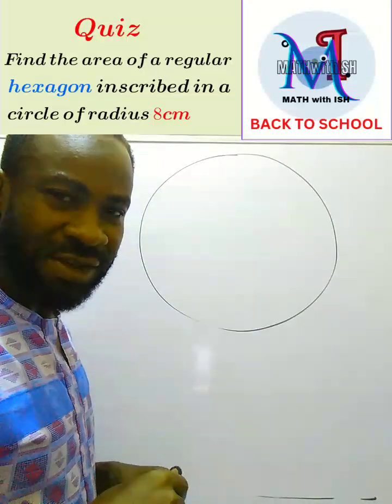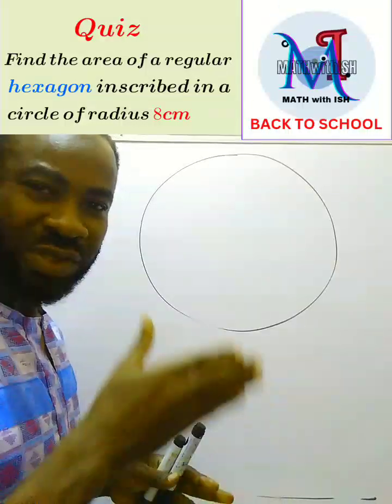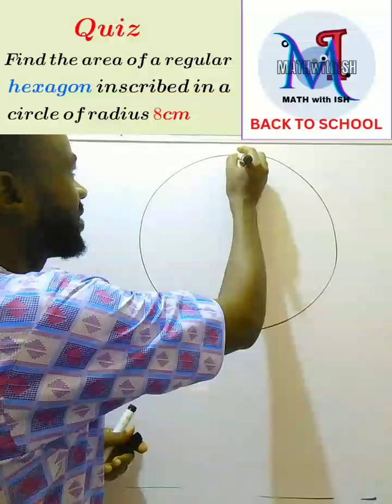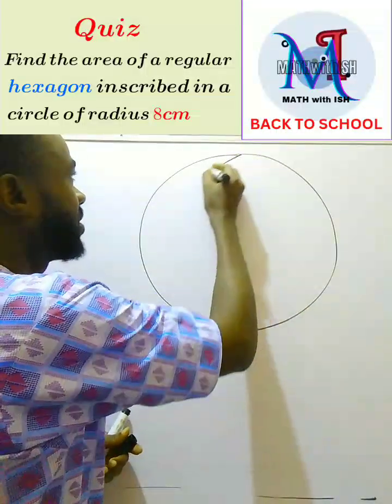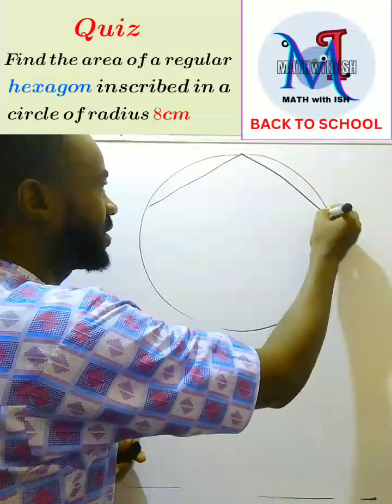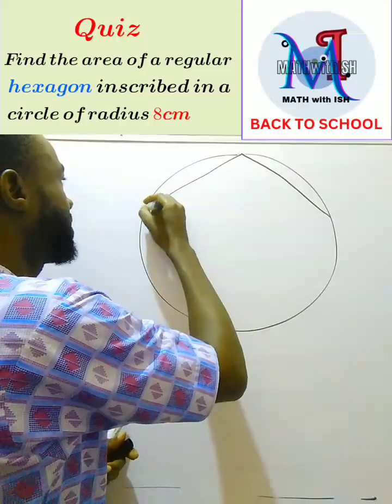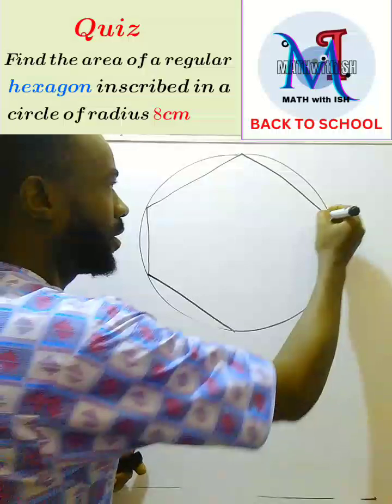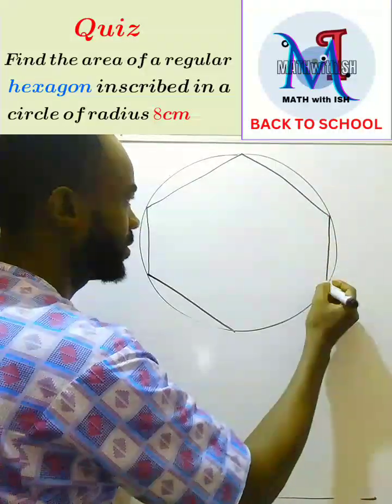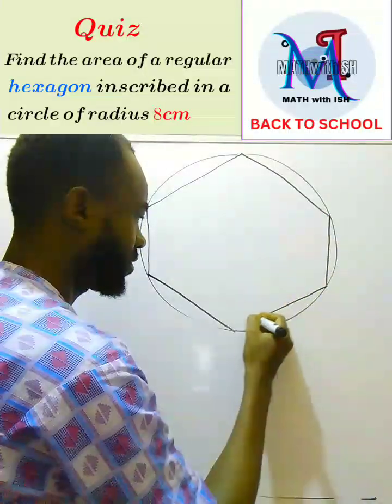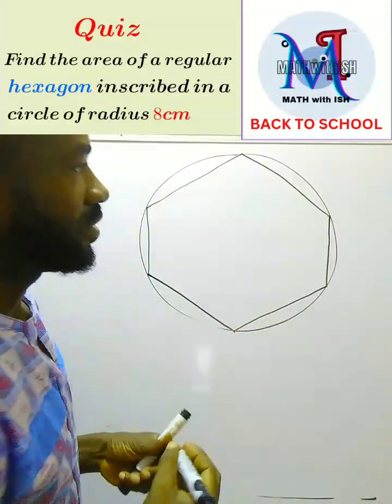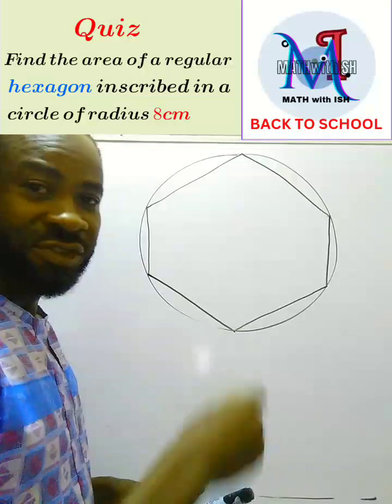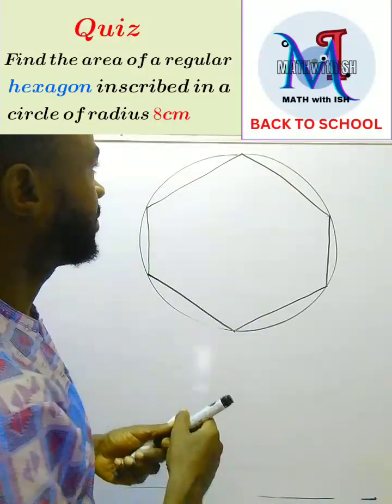Then your next question should be what is a hexagon? A hexagon is simply a polygon with six sides. So if a six-sided polygon is inscribed inside a circle, it simply means that the six vertices of that polygon are touching the circle.